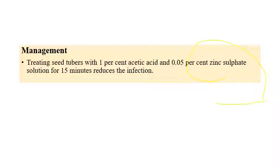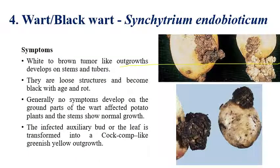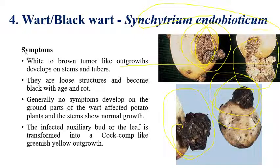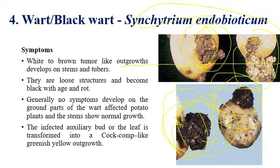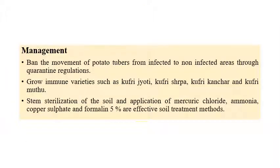Wart disease is caused by Synchytrium endobioticum. The name itself indicates warty growth or cankerous growth that develops on tubers. A corky surface or warty growth can be seen on tubers. In later stages the small corky growth resembles a cauliflower-like appearance. Resistant varieties available include Kufri Jyothi, Kufri Sherpa, Kufri Kanchar, and Kufri Muthu. Application of mercury chloride or ammonium copper sulfate formulation at five percent can also be recommended for control.